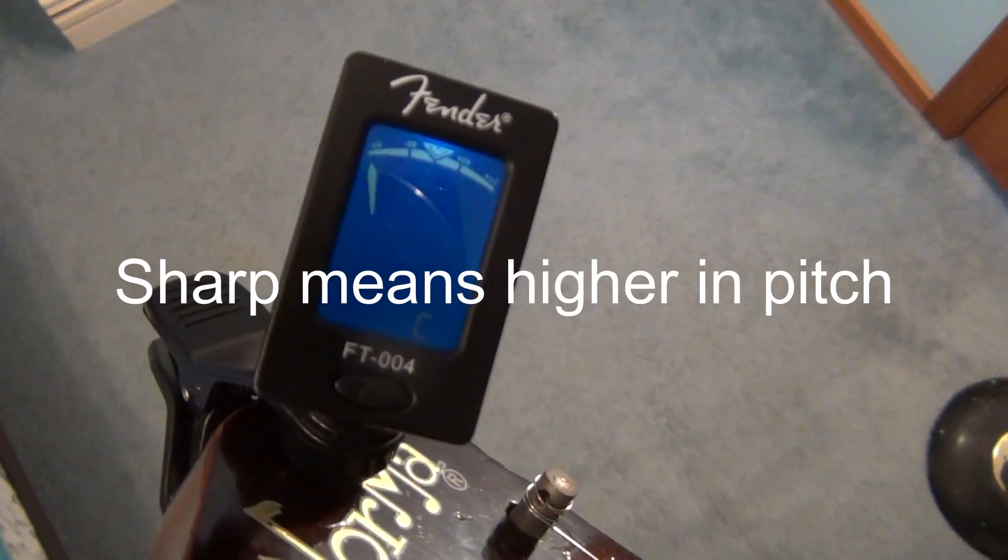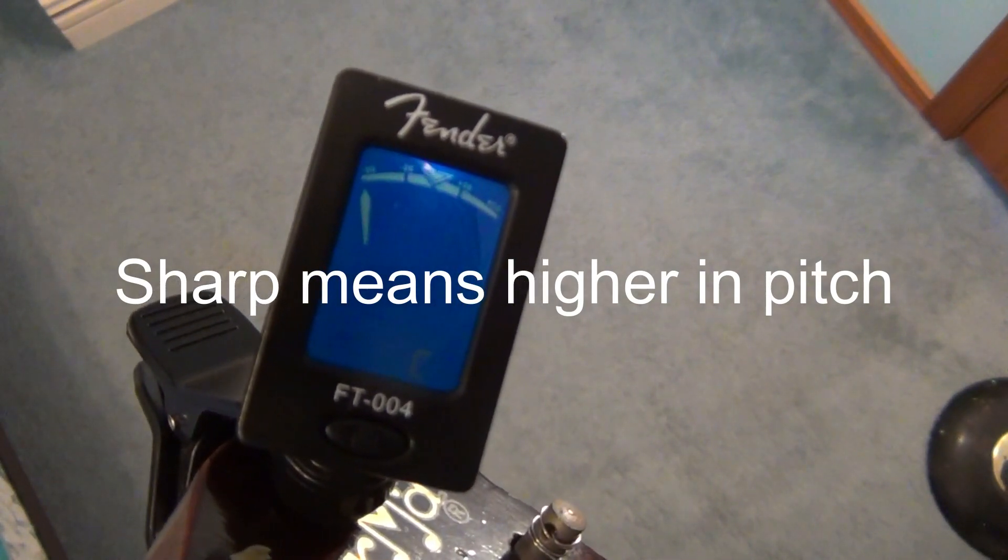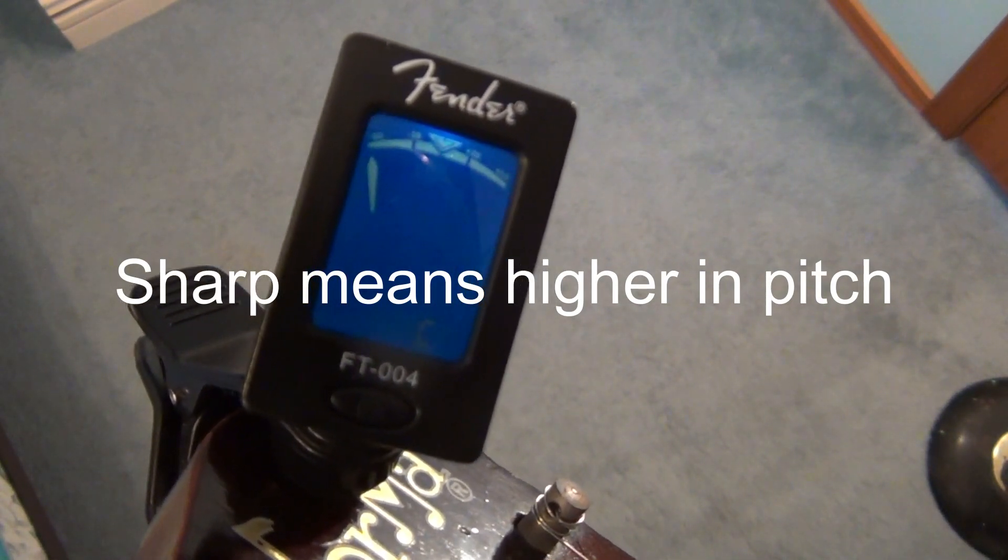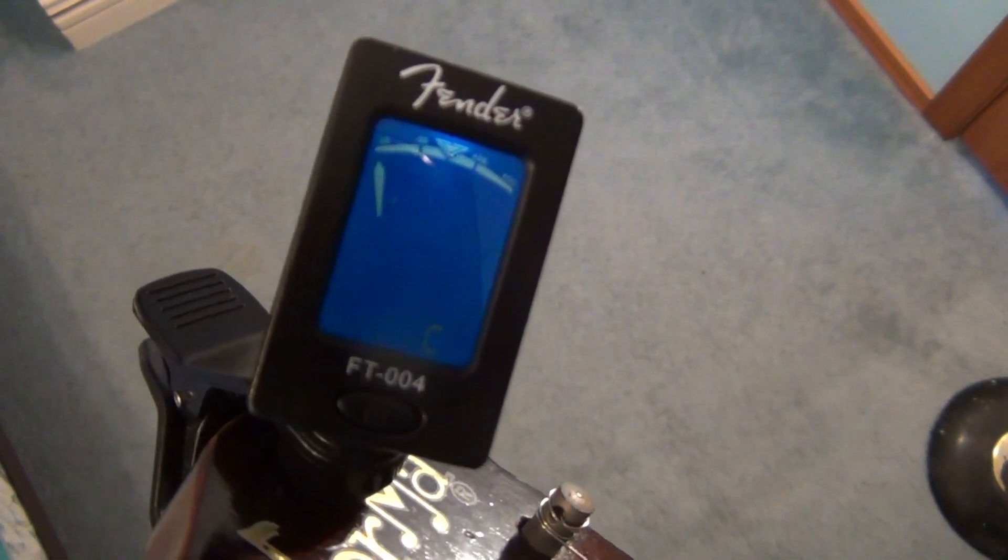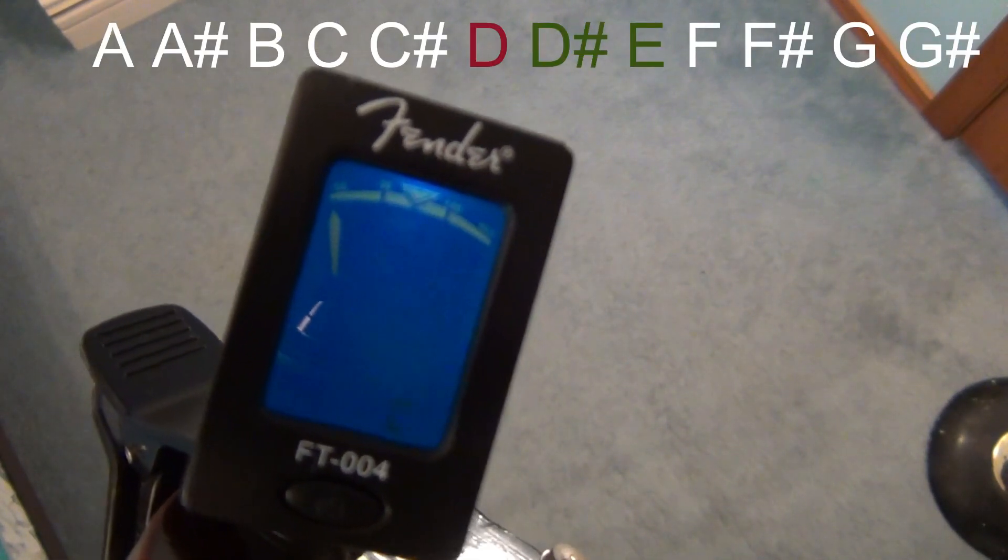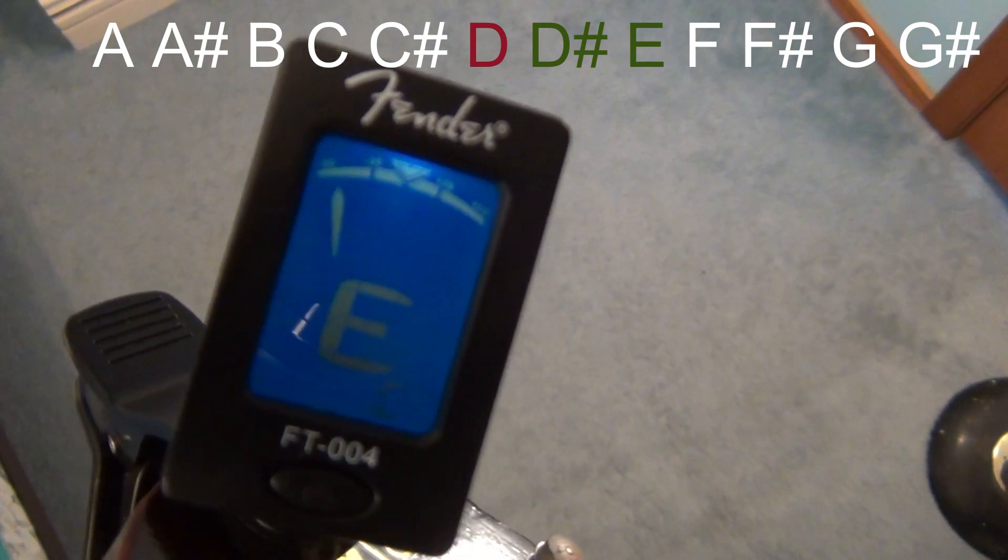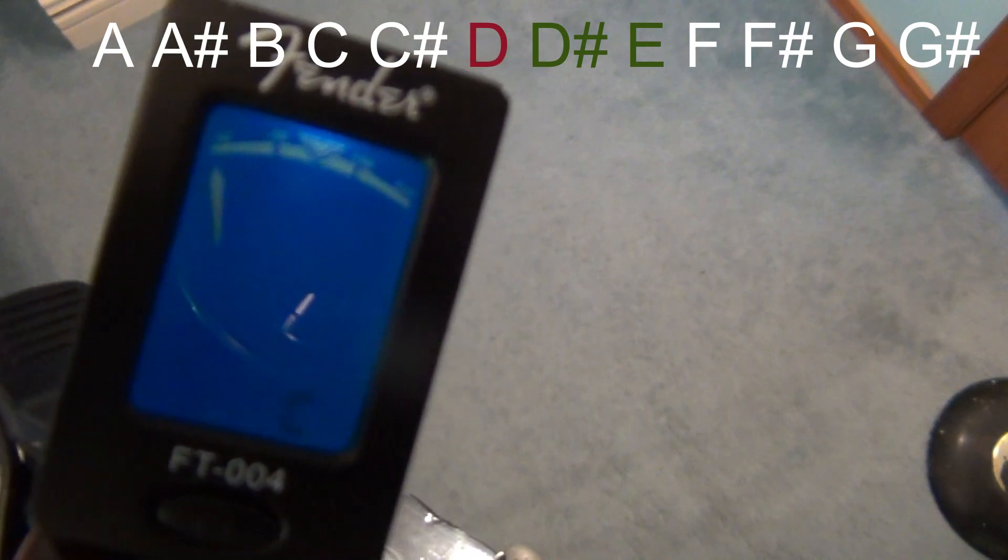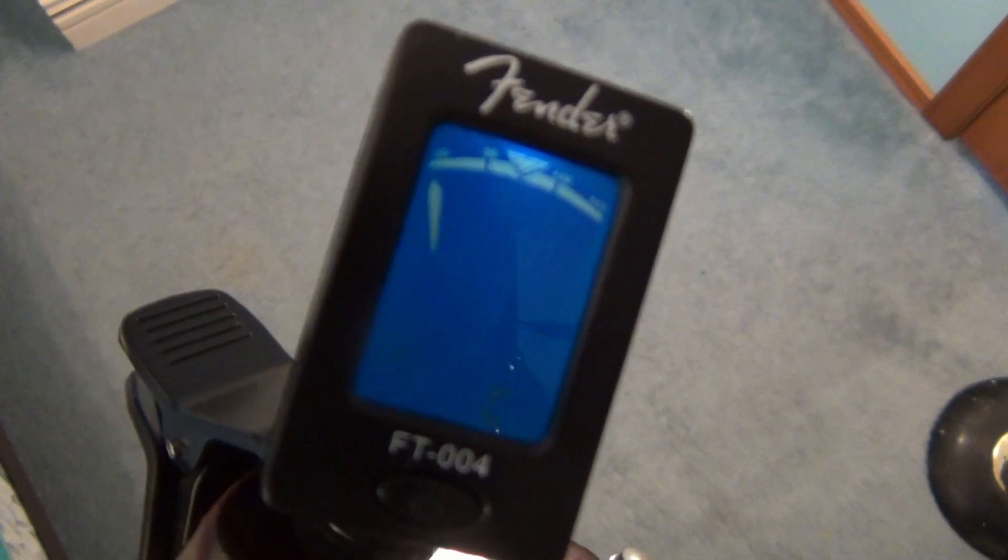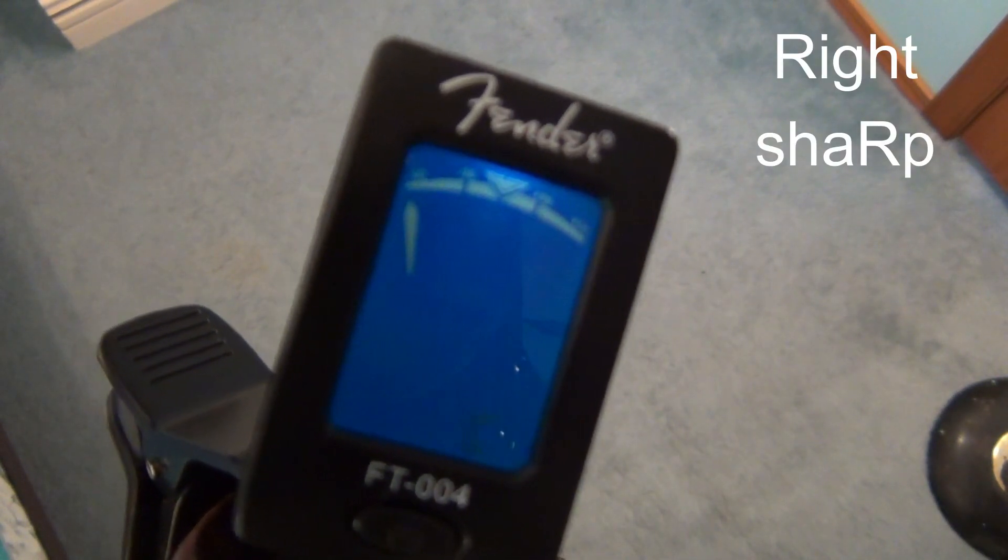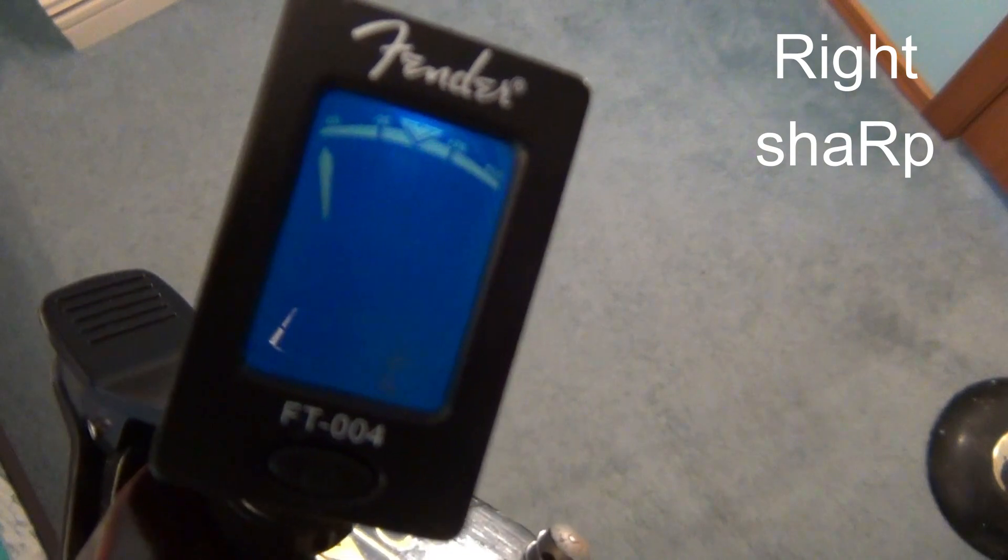Next thing we have to learn is the difference between sharp and flat. Sharp means the note or pitch is too high compared to our target note. If you're tuning to your fourth or D string, and your tuner shows a D sharp or an E, it's too high. You can also see that those notes are to the right on the chromatic scale. So the string is too tight. Think of the letter R in the words right and sharp. So this means you have to loosen the string.